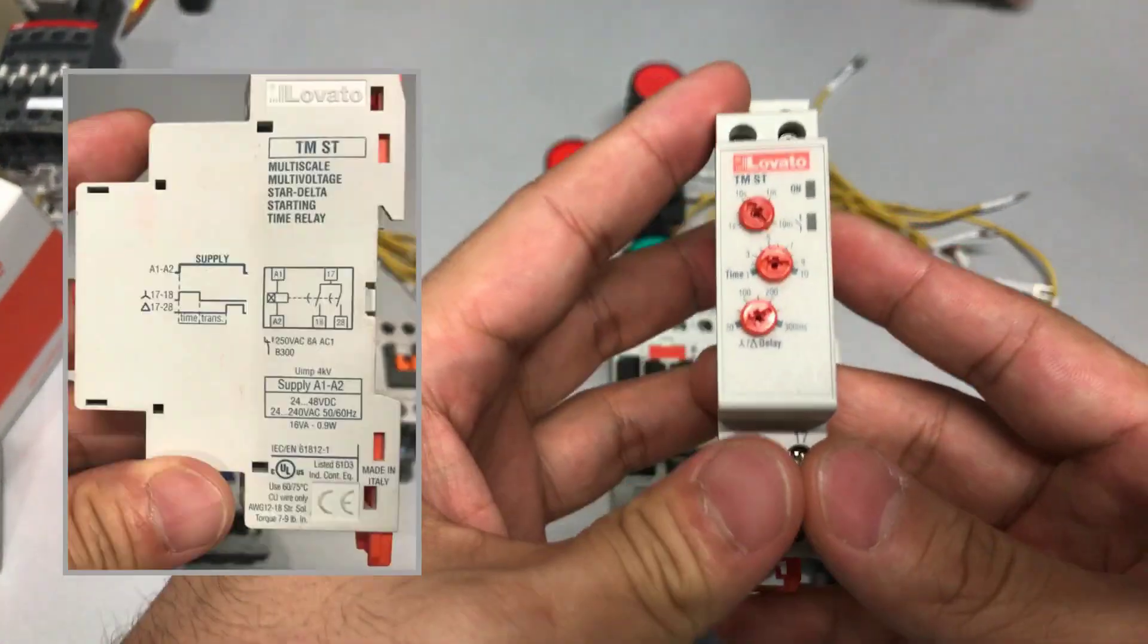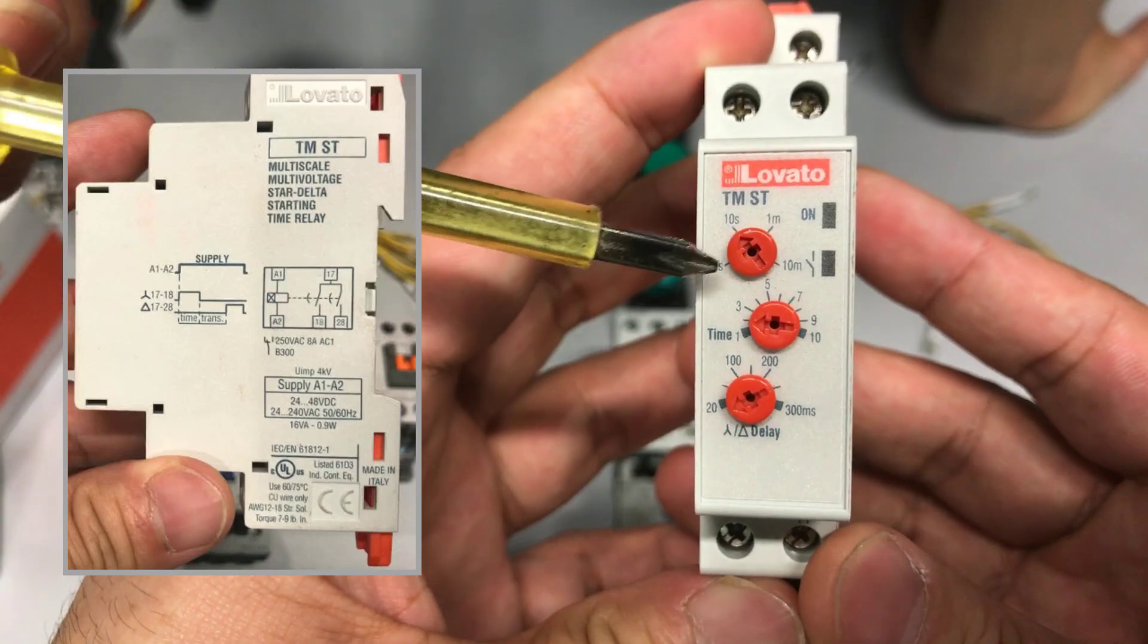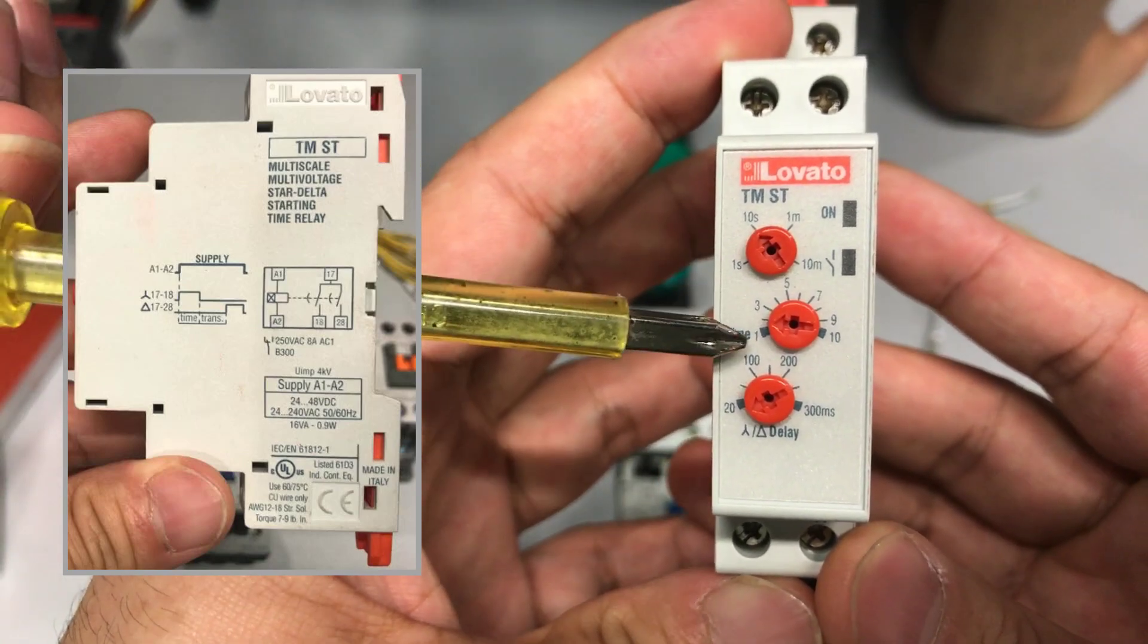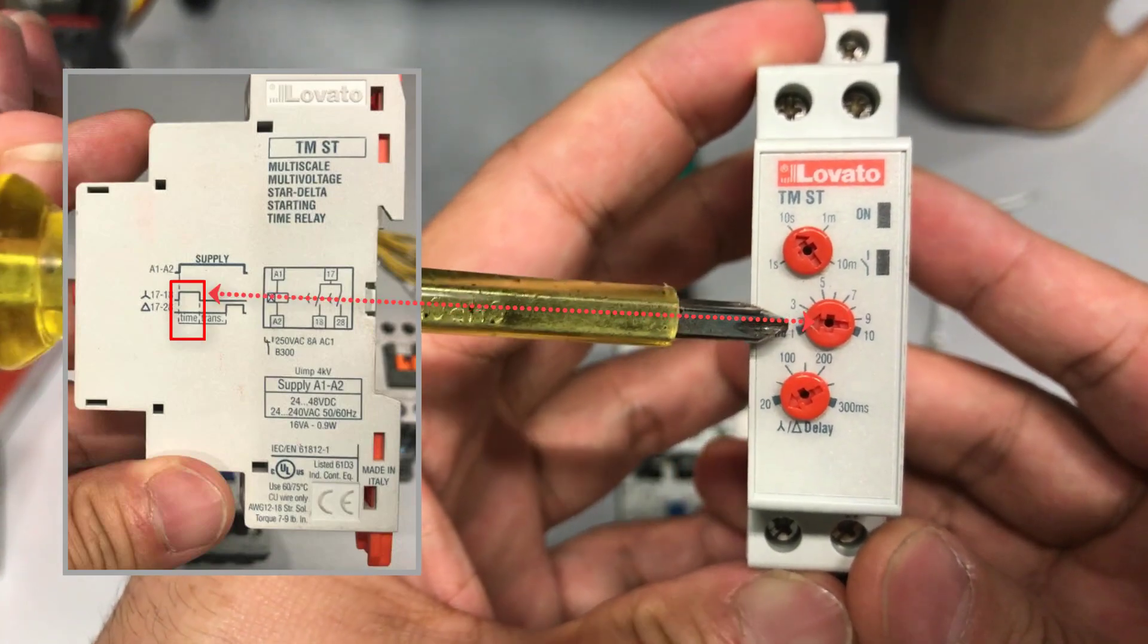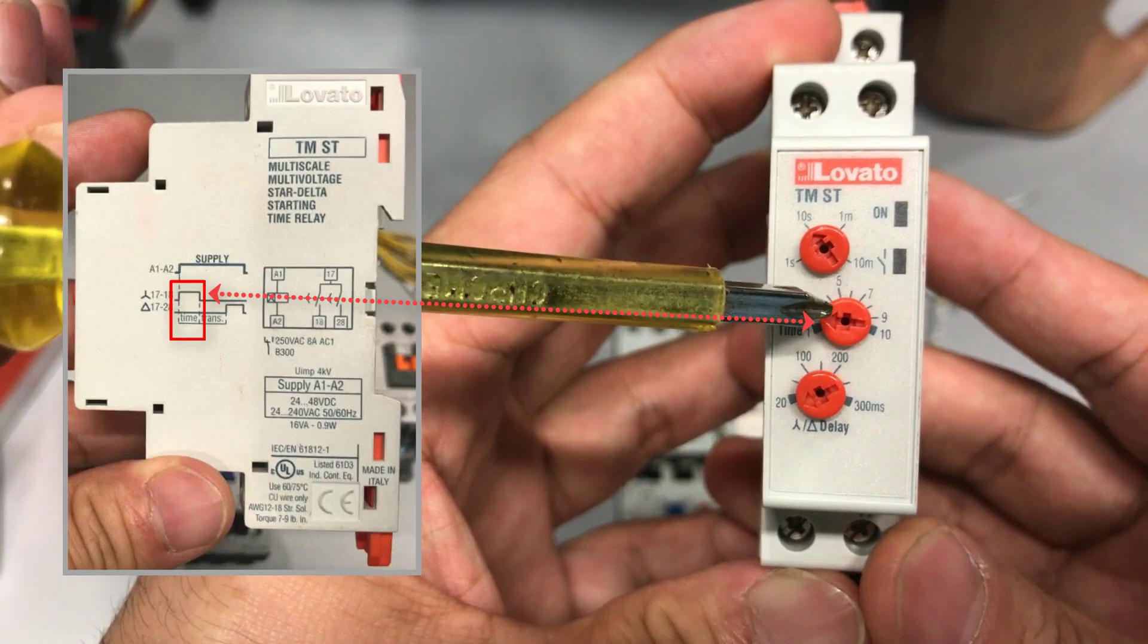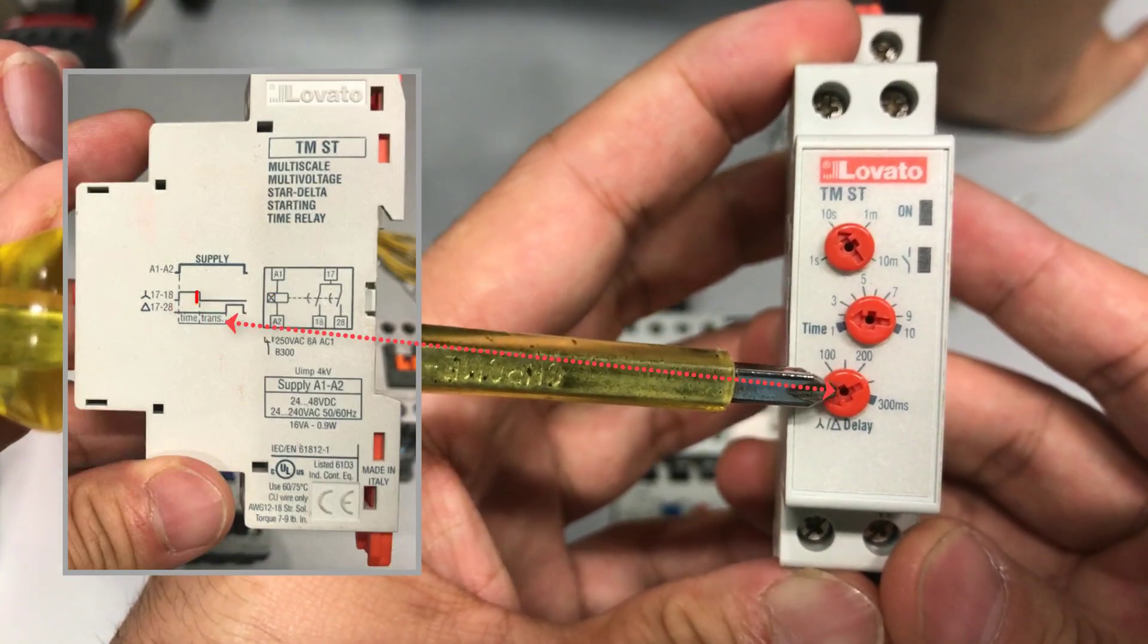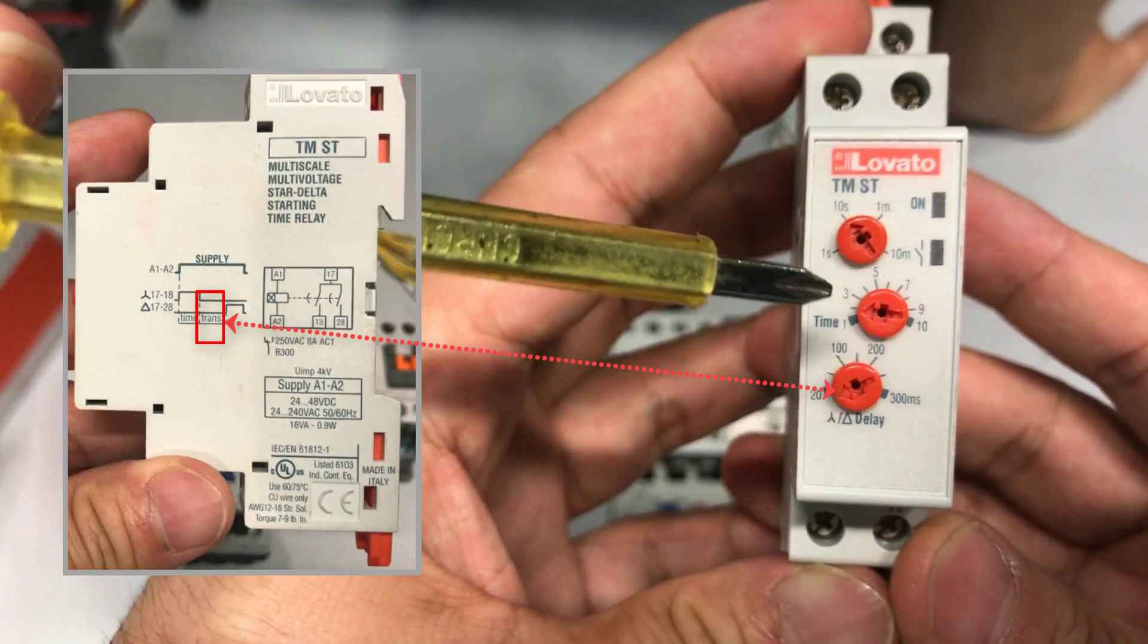Let's see how we can set up the timer. The top dial is the range and it's like a multiplier. The second dial is the time period that the star contactor will be on.